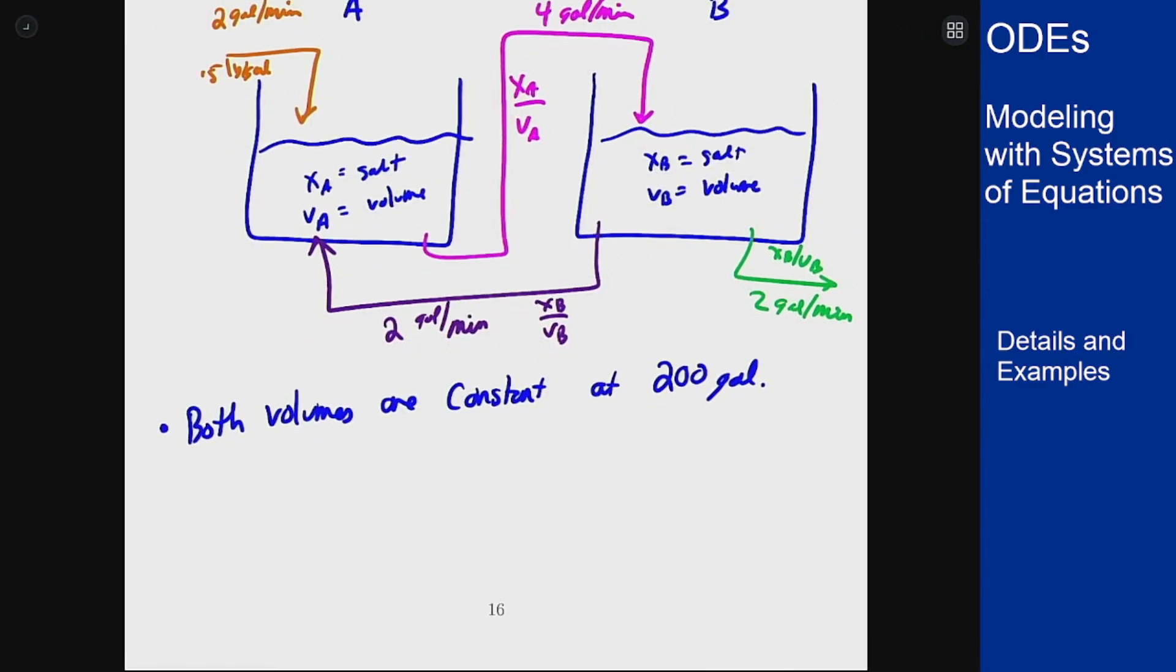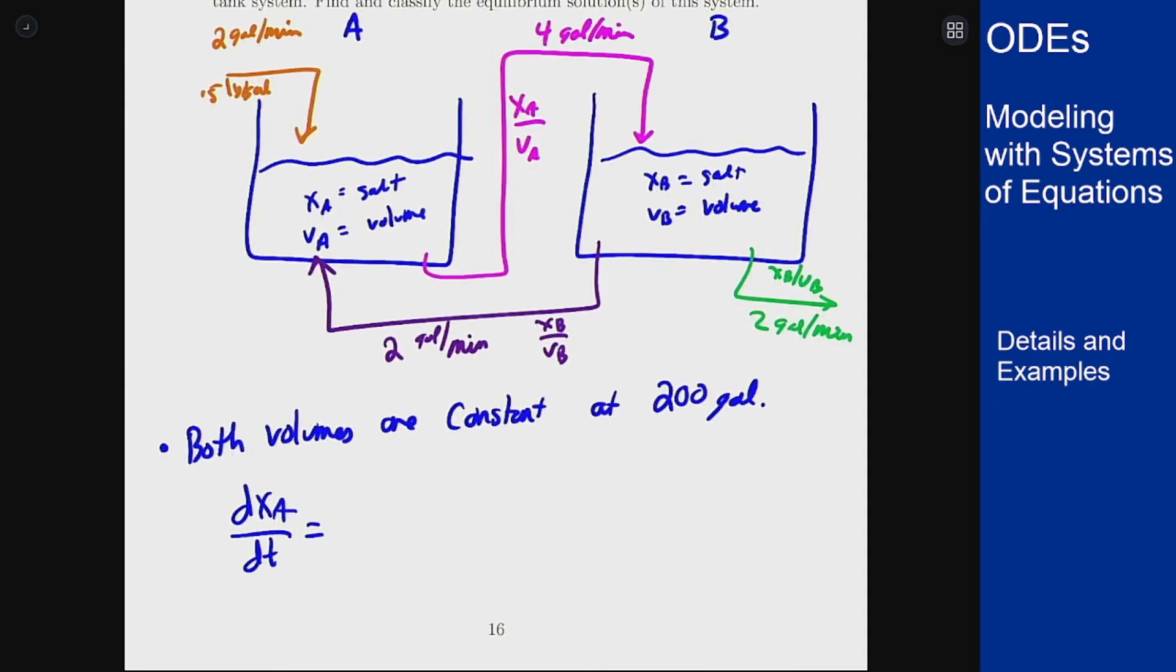If we look at XA first, we'll have that dXA/dt should be the inflow. So that's 2 gallons per minute times 0.5 pounds per gallon plus the purple inflow coming from tank B: 2 gallons per minute at XB over 200 gallons because that volume is constant at 200, and then minus the outflow in pink, which is 4 gallons per minute times XA over 200 gallons. I have taken the three streams that are going into and out of this tank and used that to give me an equation that says how XA is changing. It depends on XB so I can't solve this on its own, but it's an equation for it.